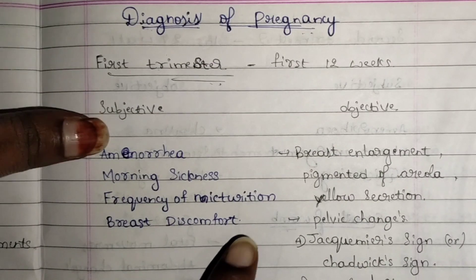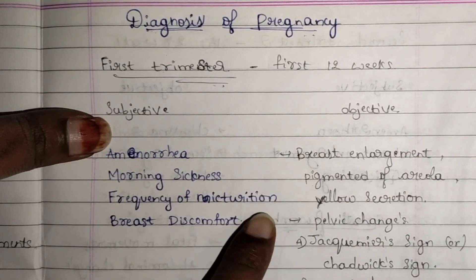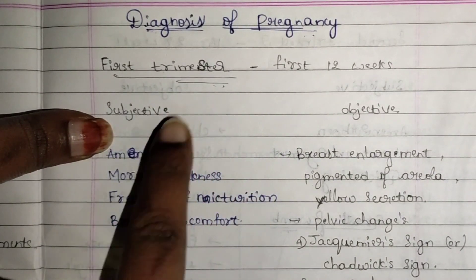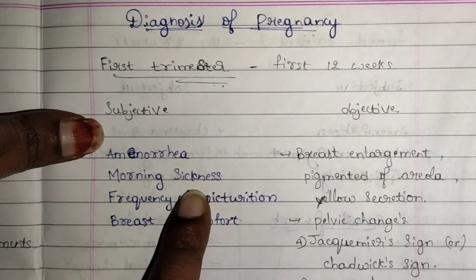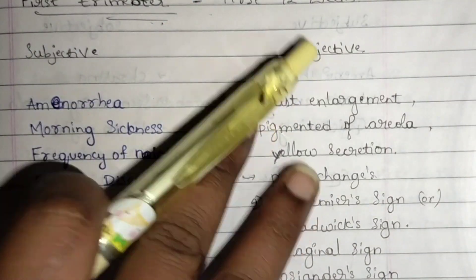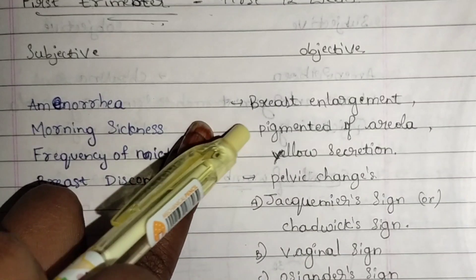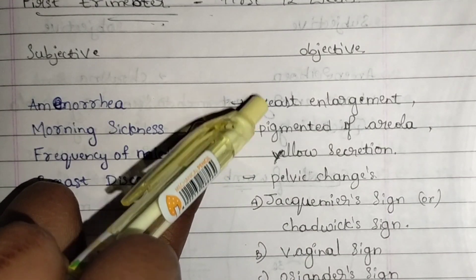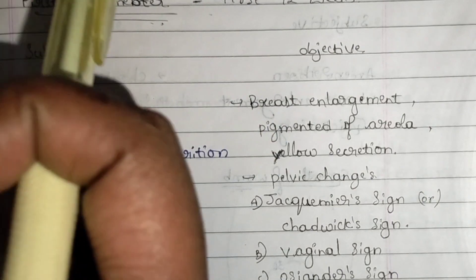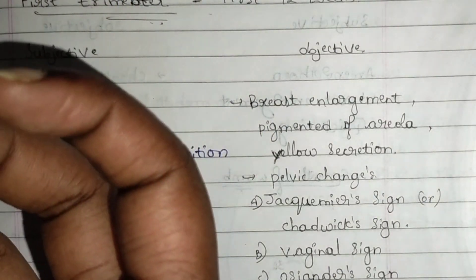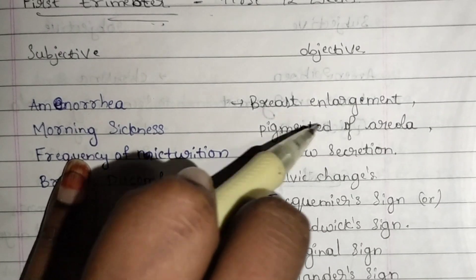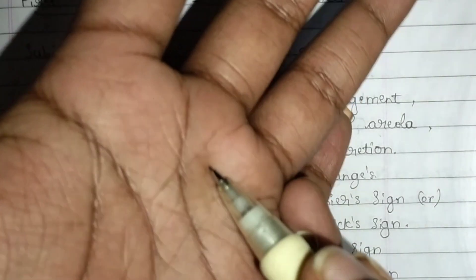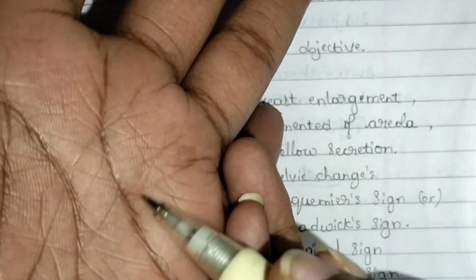These are the subjective complaints from conception to the twelfth week. For objective data, first we look at breast changes: the breast generally becomes bigger in size — it gets enlarged. There is also pigmentation of the areola; the dark color around the areola becomes darker.